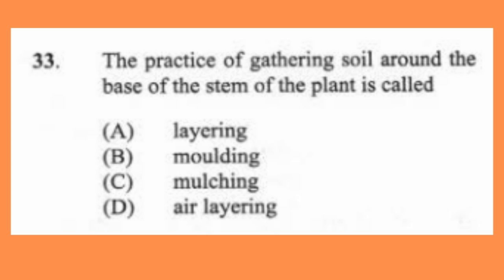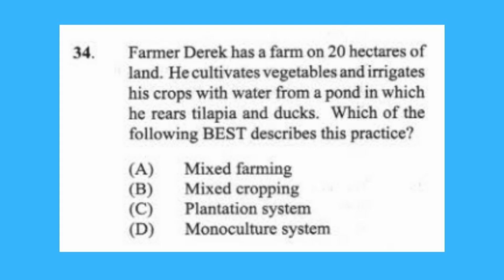Question 33: The practice of gathering soil around the base of the stem of a plant is called (a) layering, (b) moulding, (c) mulching, (d) air layering. The answer is B, moulding.